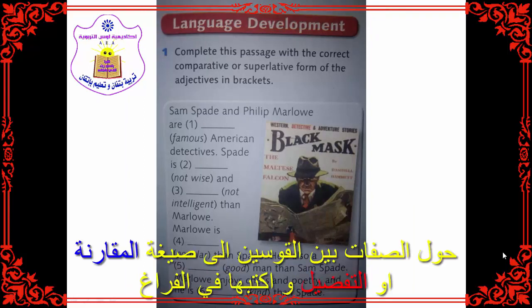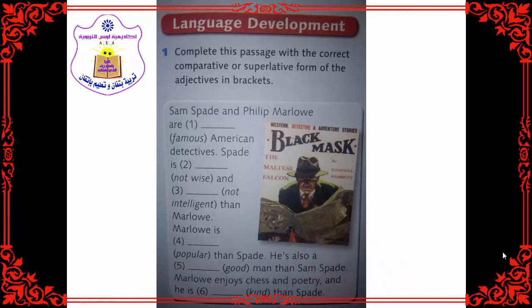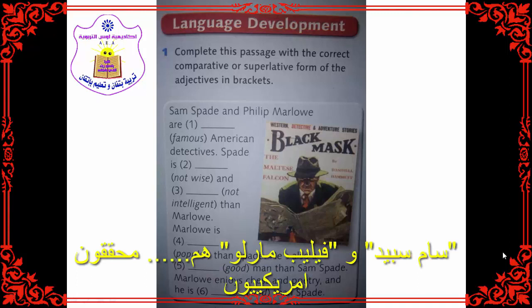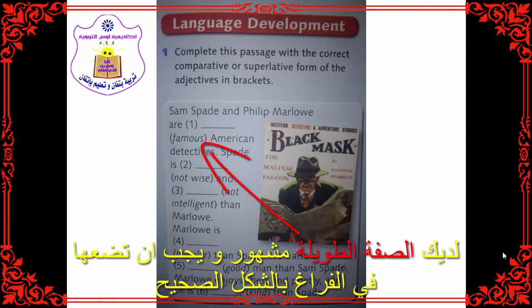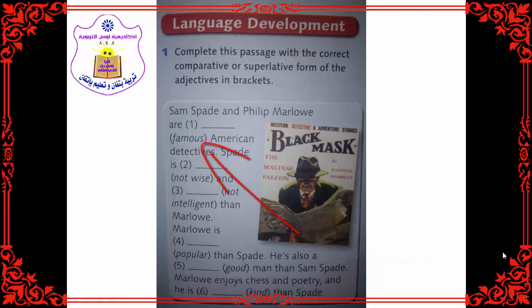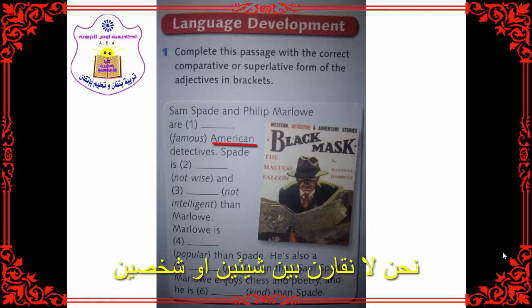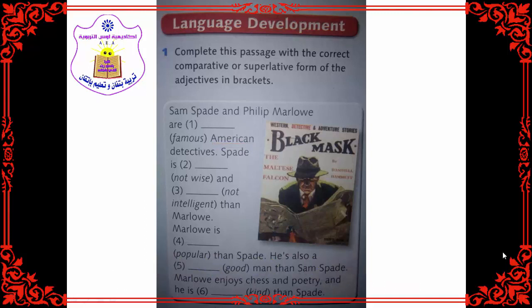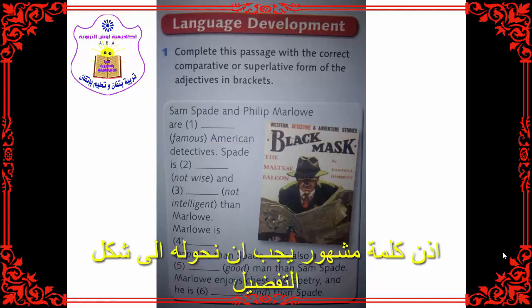Complete this passage with the correct comparative or superlative form of the adjectives in brackets. The first sentence: Sam Spade and Philip Marlowe are — you have a space and the adjective 'famous', and you must put it into the correct form. You don't compare between two things or two persons, so you must use the superlative here. Put 'famous' into the superlative form.